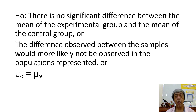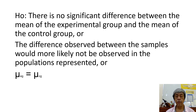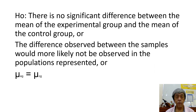The null hypothesis is: there is no significant difference between the mean of the experimental group and the mean of the control group. Or, the difference observed between the samples would more likely not be observed in the populations represented. Or, the population mean of the experimental group is equal to the population mean of the control group. Or, the population difference is equal to zero.